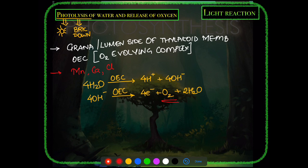Photolysis of water is the splitting of water molecules due to sunlight. It occurs at the grana or lumen side of the thylakoid membrane where the Oxygen Evolving Complex is located. The three key mineral ions — manganese, calcium, and chloride — are essential; without them photolysis cannot occur. This process was described by Robert Hill.